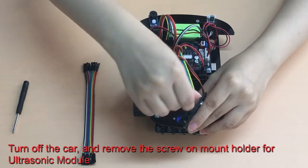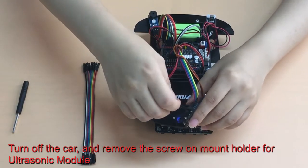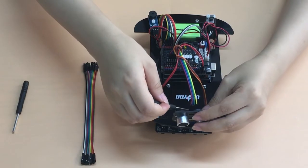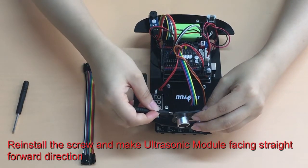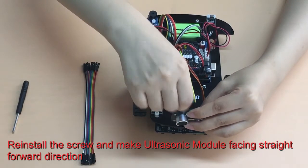Turn off the car and remove the screw on the mount holder for the ultrasonic module. Reinstall the screw and make the ultrasonic module face the straightforward direction.